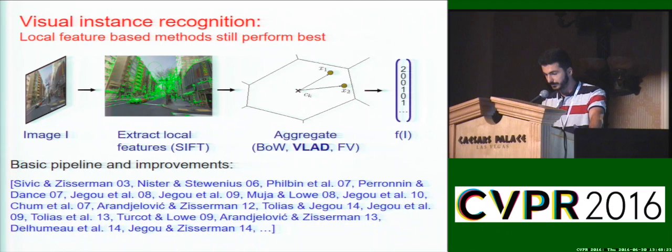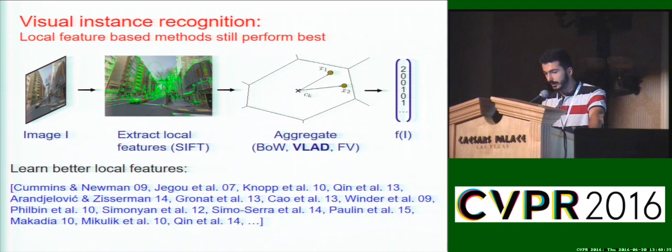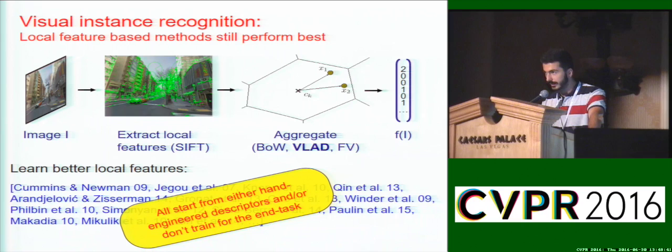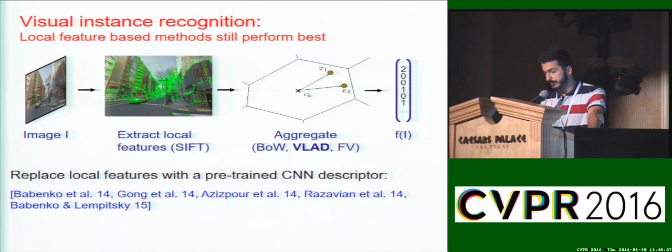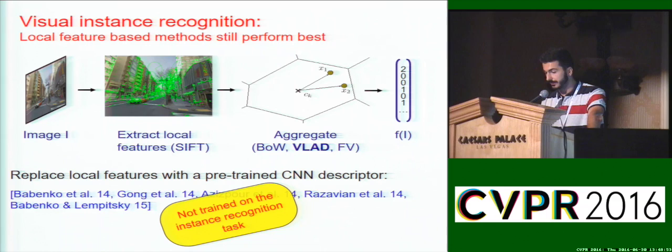However, not many methods perform learning for this task. Some past work has performed learning, but this is usually limited to learning better local descriptors. All approaches either start from hand-engineered descriptors or don't train for the end task of visual instance recognition. Some recent work has utilized convolutional neural network-based descriptors, but used neural networks trained on ImageNet classification tasks as black boxes, without training them for instance recognition.